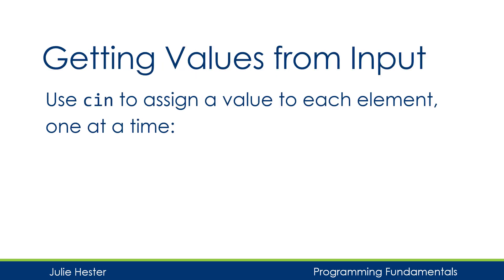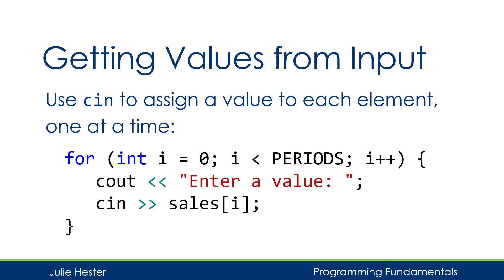Another thing I can do instead of initializing the array is get values from input from the console window. I could use cin to ask a user to give me a value for each element in the array. Again, I'm going to use a for loop here, and I'll put a prompt inside the for loop telling the user I want them to enter a value. After the prompt, I'll use cin, and whatever the user types on the console window will then be assigned to the current element in the sales array. I'm using the iterator i again as my subscript. So the first time I'm in this for loop, the value entered will be assigned to sales subscript 0, then we'll increment i, and the next number entered will be assigned to sales subscript 1, until we assign values to all four array elements.